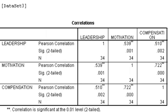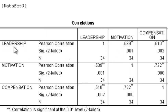Look at the note below: two stars means the correlation is significant at the 0.01 level in a two-tailed test. The correlation value must be from minus 1 to 1. If the correlation is positive, it means when leadership increases, motivation increases too, and compensation increases as well.